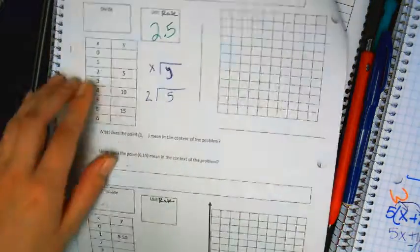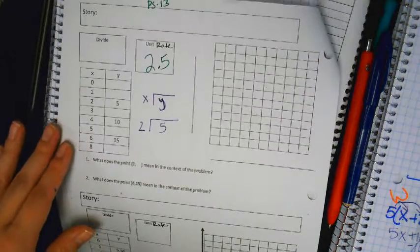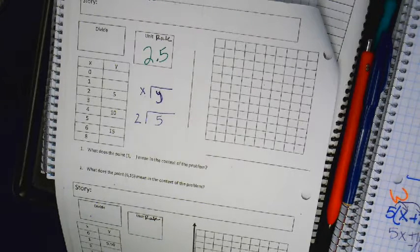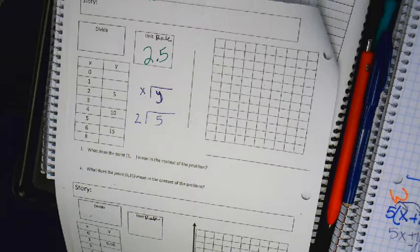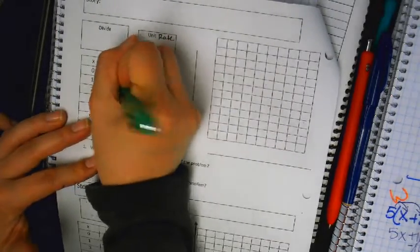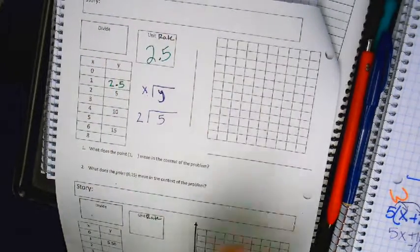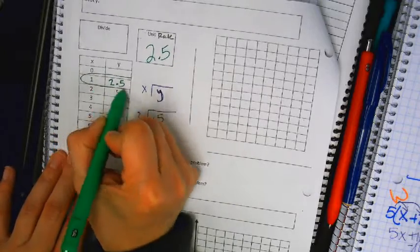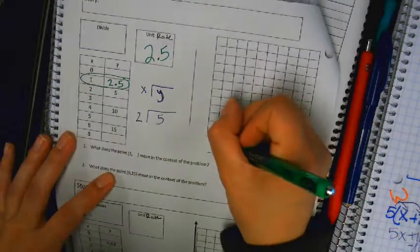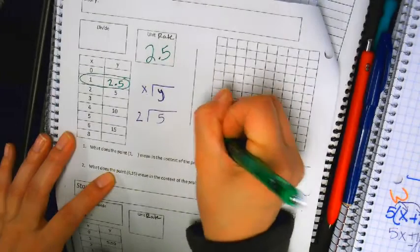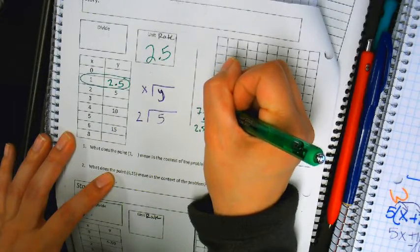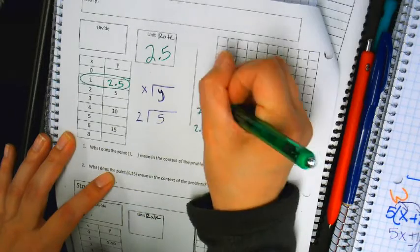Where else does your unit rate go? On the table, where does it go? Next to the 1. So if you're always wondering where's the unit rate, your unit rate can be located next to the 1 when you graph it, it would be next to the 1. 1, 2.5, 5, 7.5, 10.